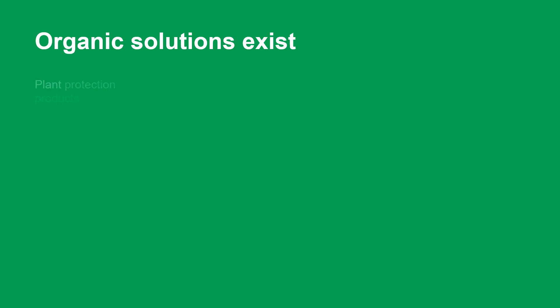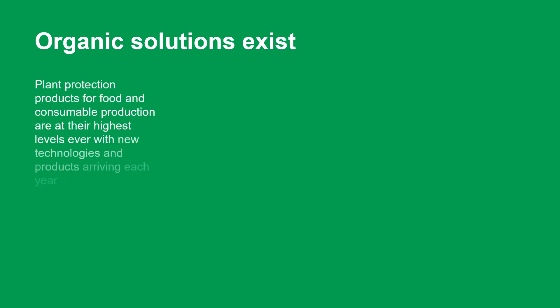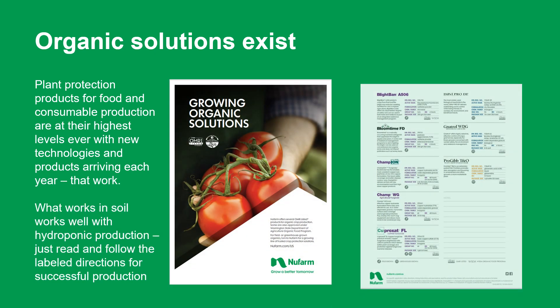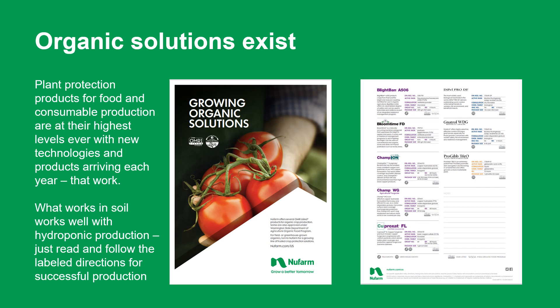Let's take a quick look at organic solutions with products that may have OMRI certification for food production. These products are limited in their control aspects but can be used with biological controls to fortify their efficacy. This works in both soil and hydroponic productions — just read and follow the directions. These examples are what New Farm and other companies provide as a list of materials that fit the organic solutions list.